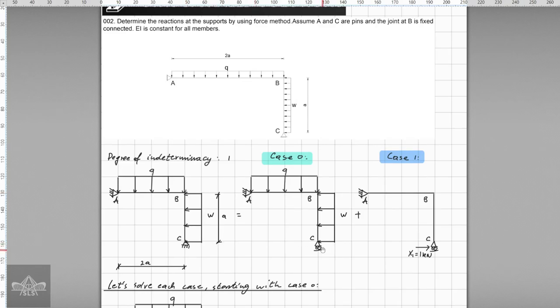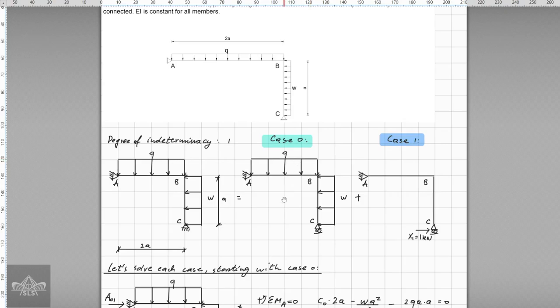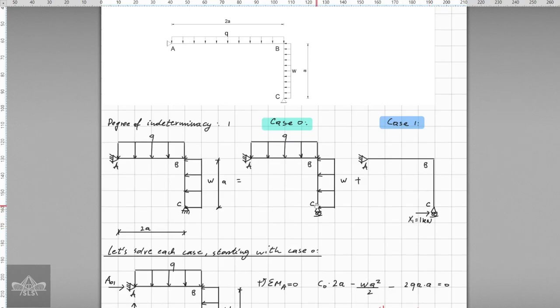But for this exercise it was decided that at support point C we release the reaction on x direction. Therefore this will make the structure statically determinate, and of course at that point where we release this reaction we have to apply a virtual force, which is one kilonewton.